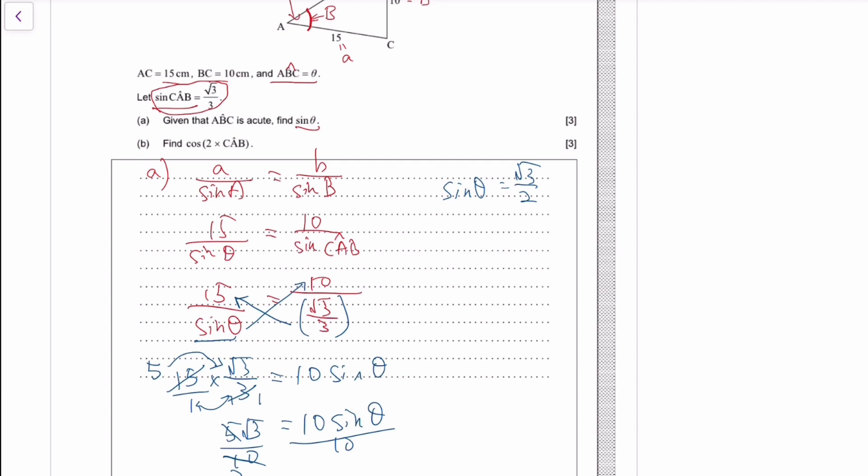Part b wants cosine 2 times CAB. This is this angle, and you see 2 times the angle, so that should ring the bell of doing cosine double angle formula. Go to the formula booklet to find the double angle formula. You should see there are three choices. Which one do we use depends on information you're given. You're given sine, so we'll do the option that only contains sine because we don't know cosine.